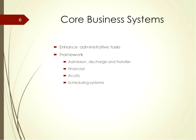Core business systems enhance administrative tasks within health care organizations. Unlike clinical information systems whose aim is to provide direct patient care, these systems support the management of health care within an organization. Core business systems provide the framework for reimbursement, supportive best practices, quality control, and resource allocation. The four common core business systems are admission, discharge, transfer or ADT systems, financial systems, security systems, and scheduling systems.